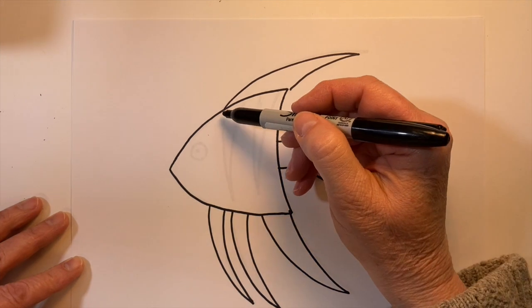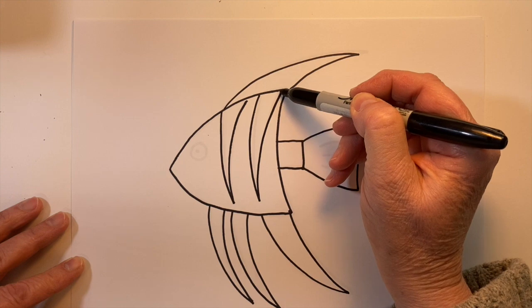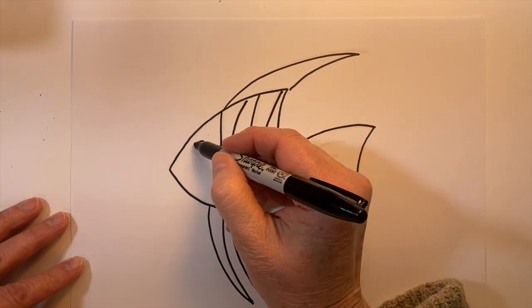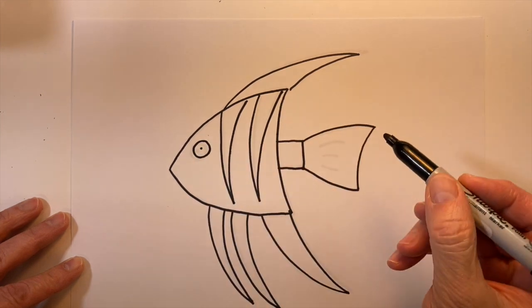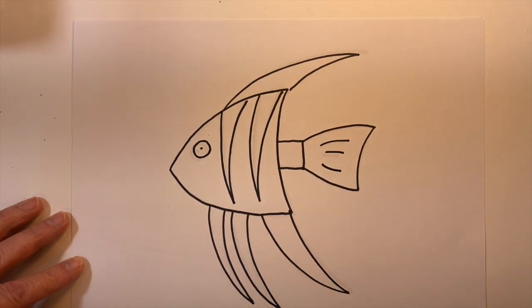And the beautiful markings of the angelfish we'll just add. They're really kind of curved V's, aren't they? And a circle for an eye and just a few little markings on the tail.